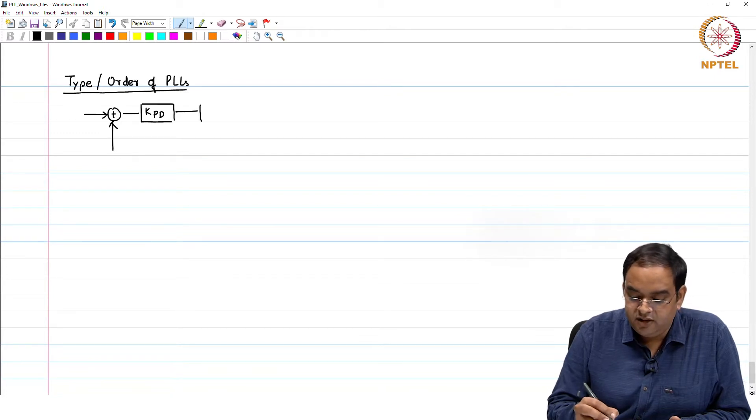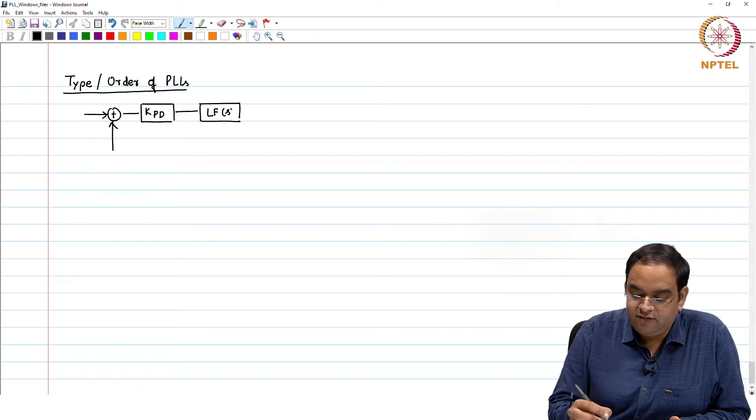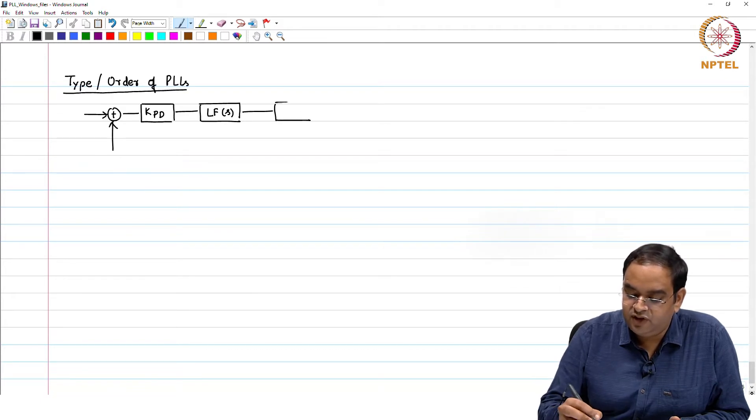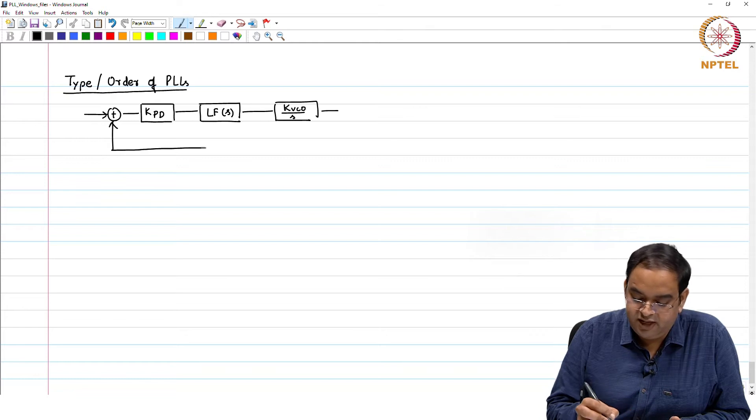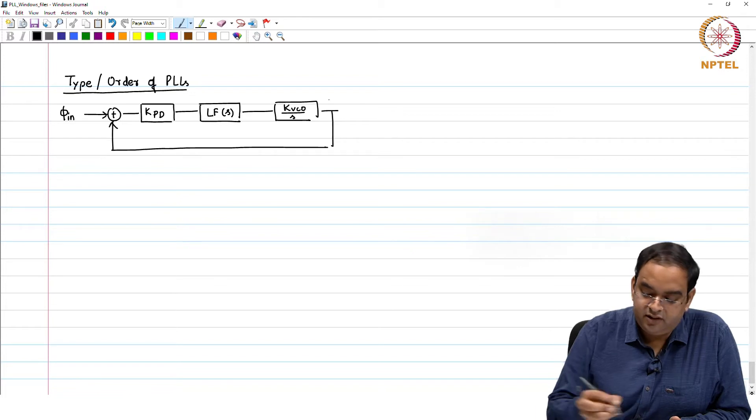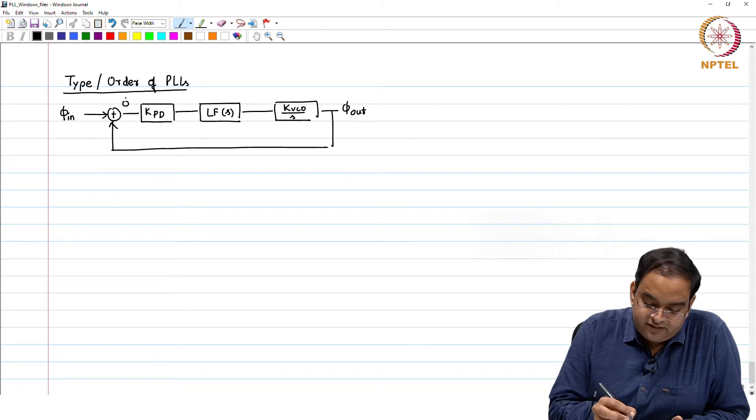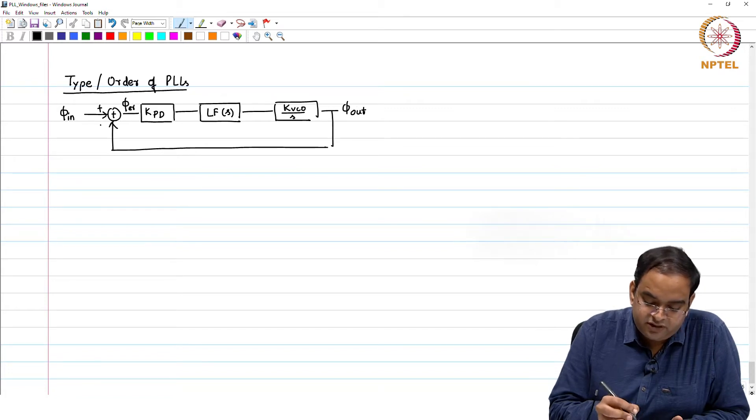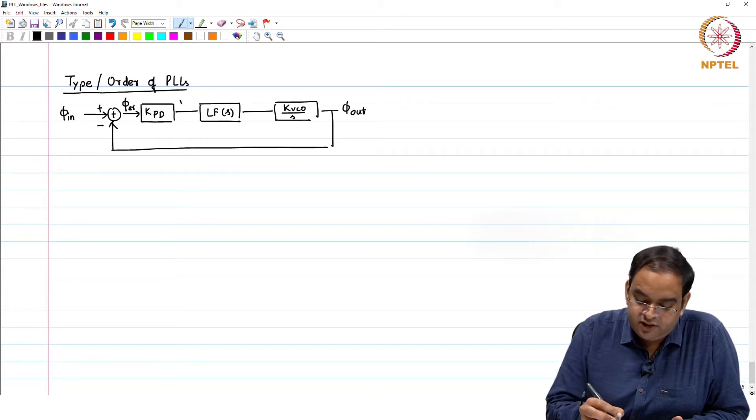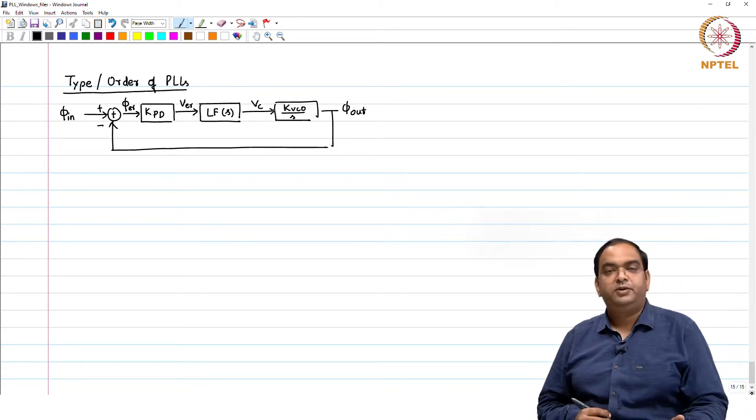We have KPD, we have the loop filter transfer function LF of S, and then we have the VCO which has transfer function KVCO over S. Here is phi in and this we have phi out. Phase error, positive, negative, you have V error, you have V control like this.